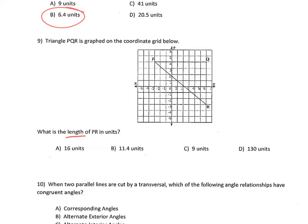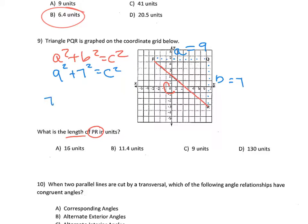Number nine: triangle PQR is graphed on the coordinate grid below. What is the length of PR in units? PR is my diagonal side — that's my C. So I need to find the length of the other two sides, A and B. I count: one, two, three, four, five, six, seven, eight, nine, and then one, two, three, four, five, six, seven. So nine squared plus seven squared equals C squared. Taking the square root gives us 11.4.